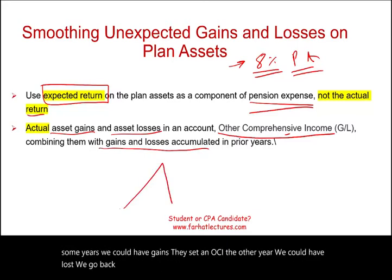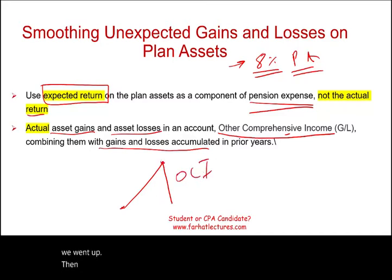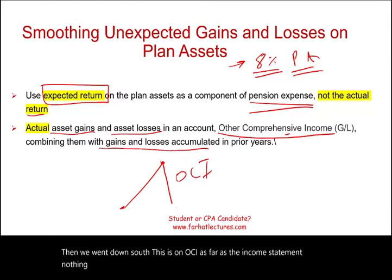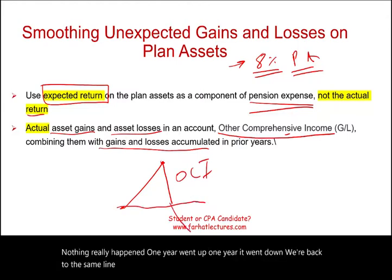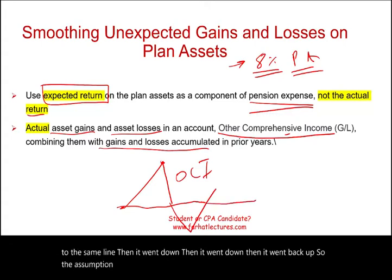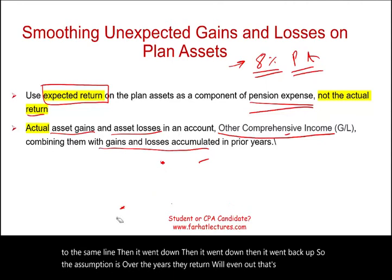One year it went up, then it went down, back to where we were. As far as the income statement, nothing really happened — one year up, one year down, back to the same line. Then down again, then back up. The assumption is that over the years the return will even out. That's the assumption when we keep them in OCI.